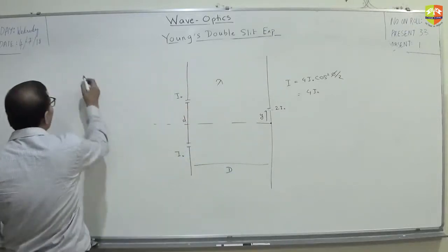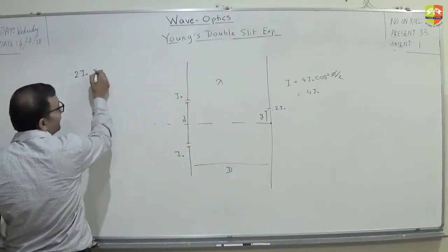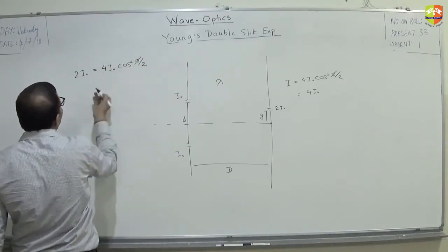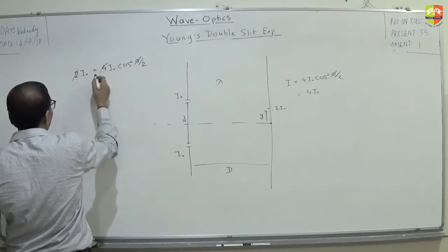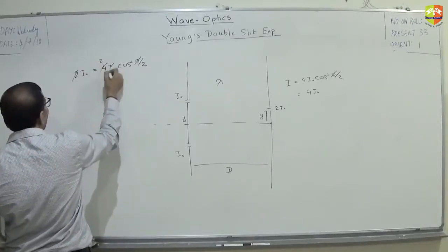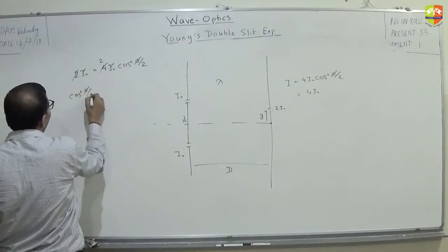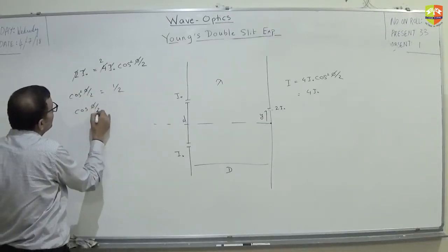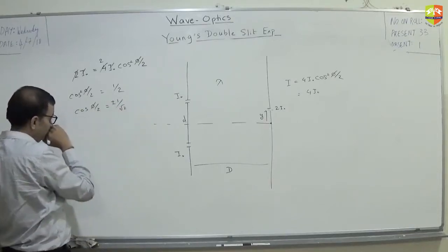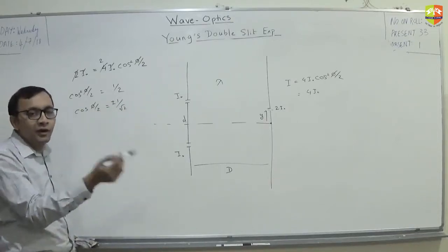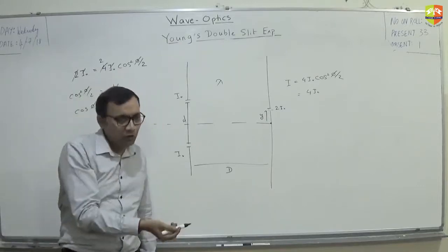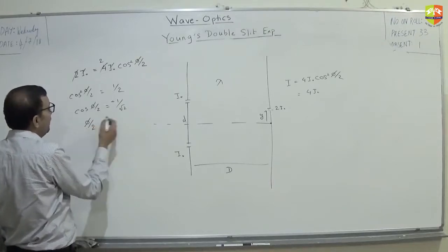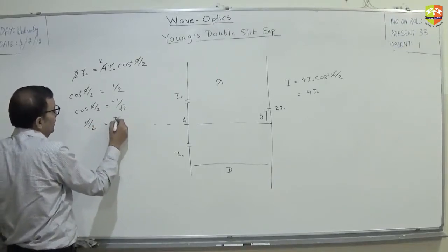First of all, when intensity becomes 2i0, I can get the phase 4i0 cos square phi by 2. So, cos square phi by 2 becomes 1 by 2. So, cos phi by 2 becomes 1 by root 2 plus minus. So, plus minus means one point will be above, one point will be below. So, I will just take plus over here. Just for the sake of simplicity.